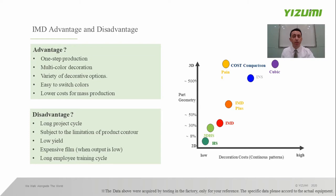However, production in small quantities will have high cost. IMD also has its own disadvantages. First, the project takes a long period of time and requires special molds and special film, so project time takes longer than conventional injection molded parts. Second, IMD process is only suitable for two-dimensional shapes. Third, there will be a low yield if the whole IMD process is not well controlled. Fourth, the films are expensive, and low output will further increase cost. Fifth, employees have to be familiar with the IMD process — mold feeding, position adjustment, and injection molding parameters — so employee training will be lengthy.